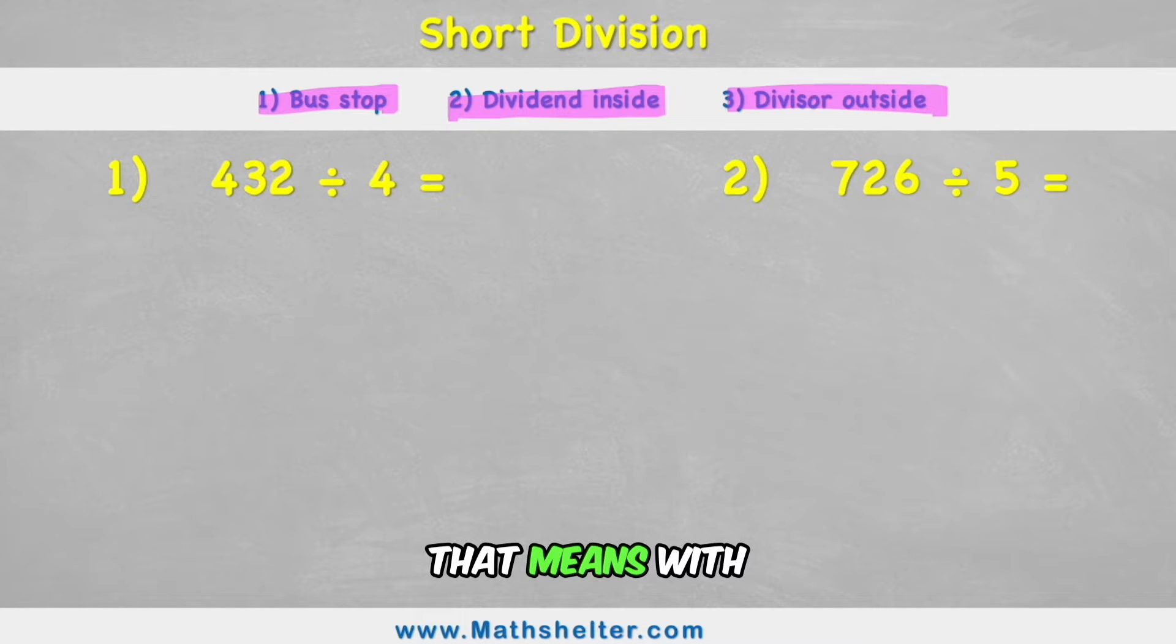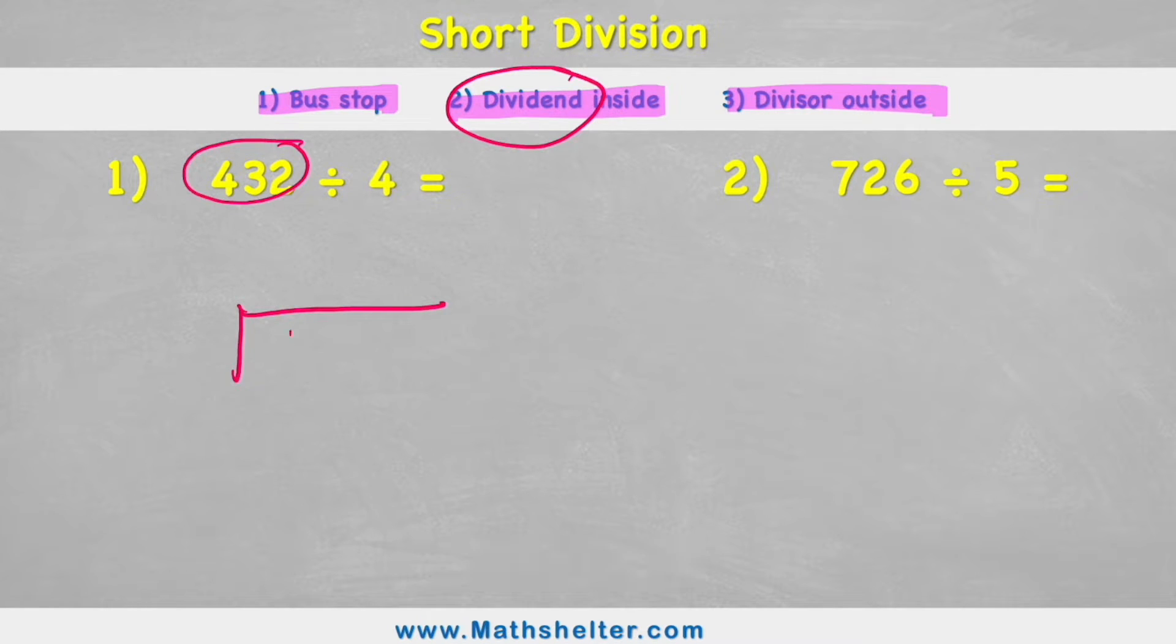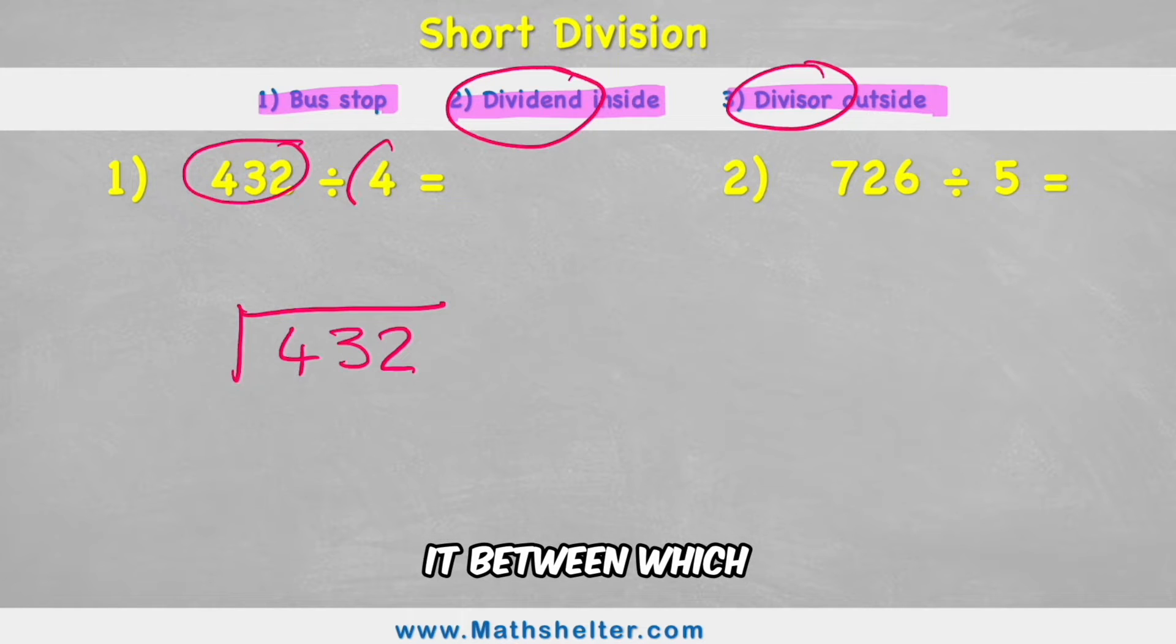So let's see what that means with this first example: 432 divided by 4. I'm going to set up my bus stop and then I want to understand that the dividend is the large number that's being shared. So I'll put my 432 inside my bus stop and the divisor is the amount we're sharing it between, which is this 4. Now I'm ready to begin.